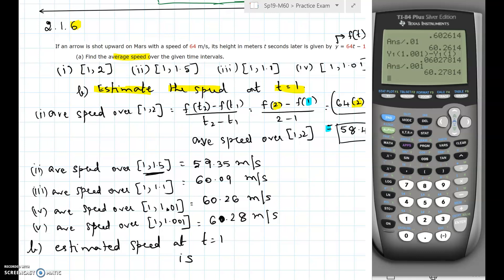We get the estimated speed at t equals 1 will be where these values are tending to. It started at 58.4 then 59.35, 60.09, then slowly coming down to 60.28. The limit value of all the average velocities is 60.28 meters per second. It is the limit of the average velocities.